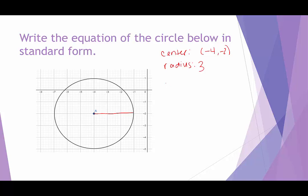Now we're going to plug this into the standard form of a circle formula. That would be x minus negative 4, which is x plus 4 quantity squared, plus y minus negative 2, which is y plus 2 quantity squared, equals radius squared. We square the radius, so the final equation is: x plus 4 squared plus y plus 2 squared equals 9.